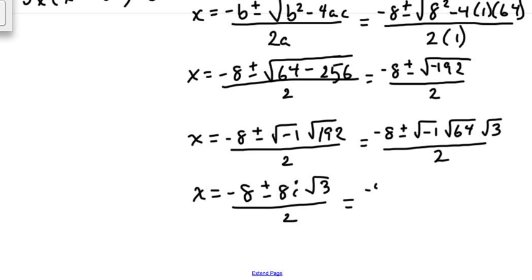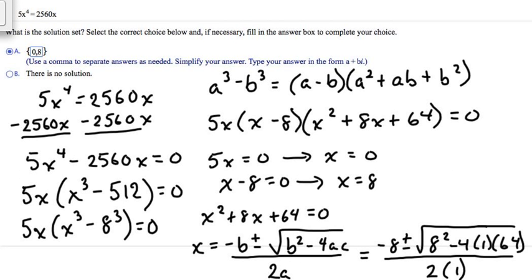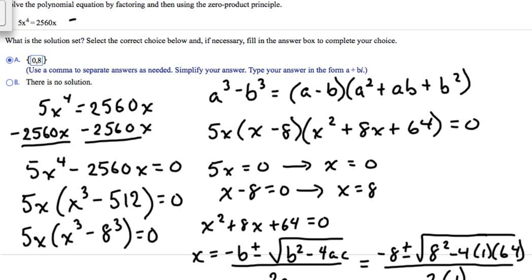Our final step is to divide everything by 2: negative 8 divided by 2 is negative 4, and 8i divided by 2 is 4i. So x equals negative 4 plus or minus 4i radical 3. This gives two answers: negative 4 plus 4i radical 3, and negative 4 minus 4i radical 3. Combined with the two earlier answers, the four solutions are: 0, 8, and negative 4 plus or minus 4i radical 3.